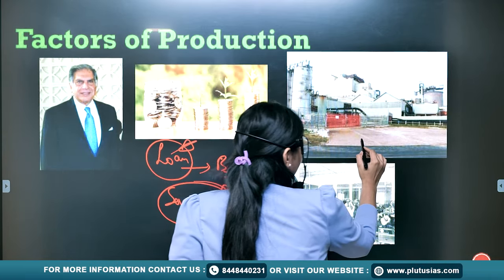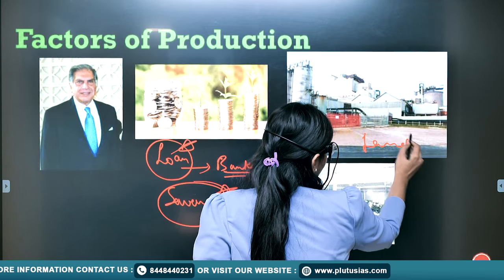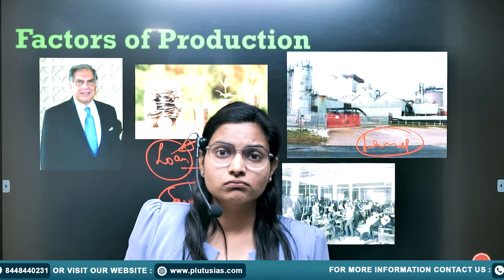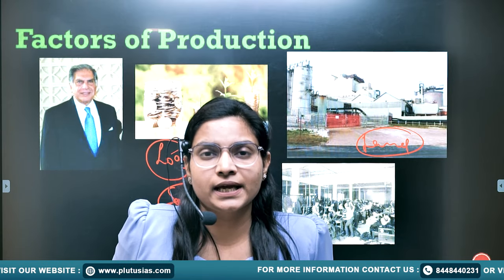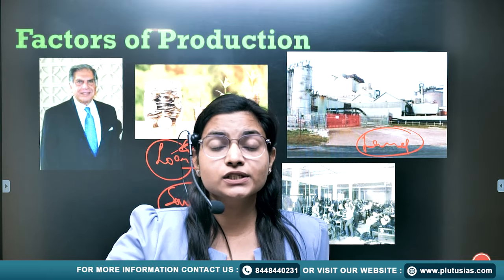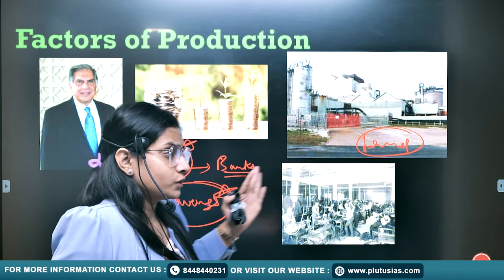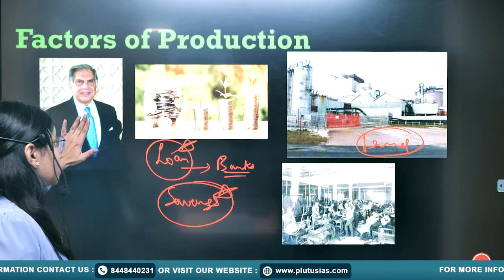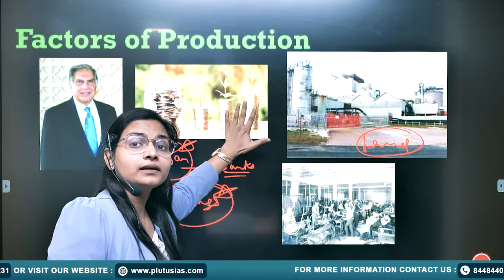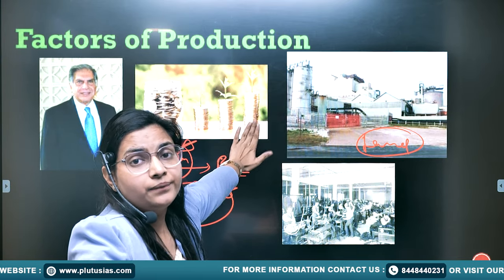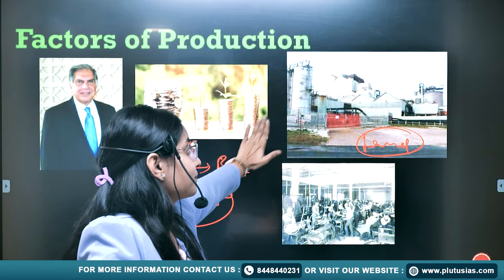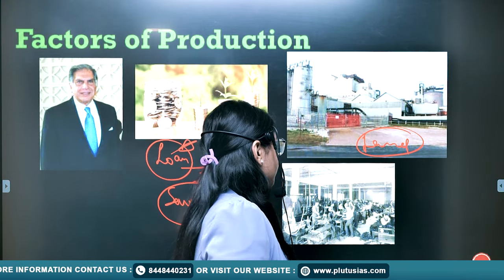Thereafter, for opening a factory, he needs a land. It could be any institution — you can take the example of Plutus IS. Obviously, for that also, there was a need of land so that the institution can be opened. So, the first factor of production is entrepreneur like Ratan Tata Ji. Then comes the money, which can be taken from banks. The next factor of production is land.